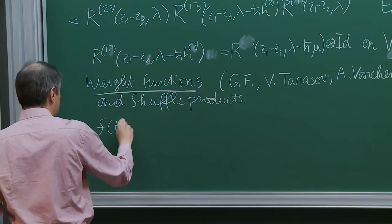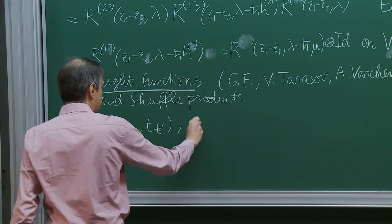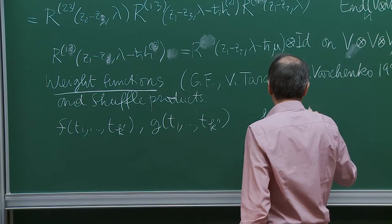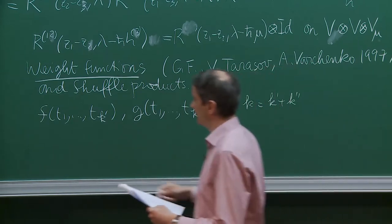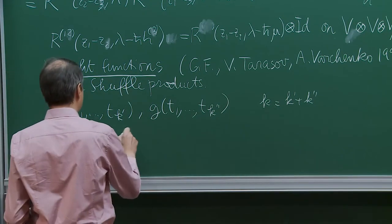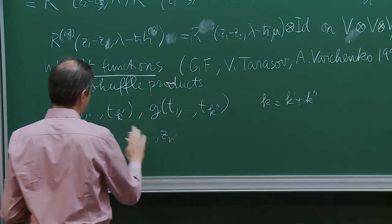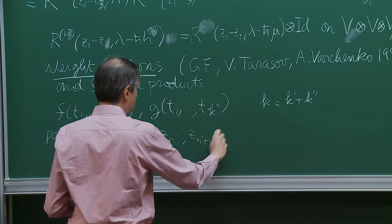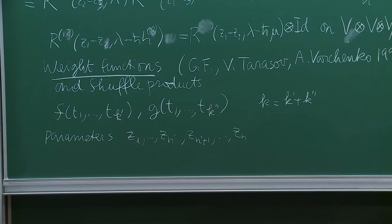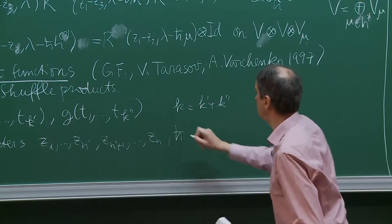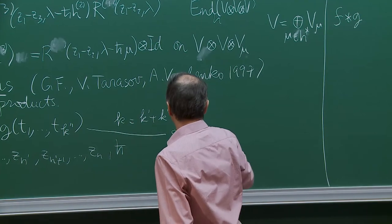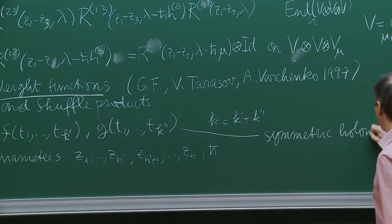Suppose you have two functions, f of t_1,...,t_{k'} and g of t_{k'+1},...,t_k, with k = k' + k''. You also have parameters z_1,...,z_{n'} associated to the first function and z_{n'+1},...,z_n associated to the second. Then you define a shuffle product f ⋆ g. These are symmetric holomorphic functions — symmetric under permutations of all variables.